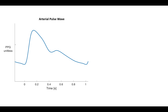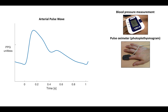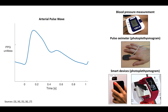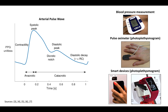The arterial pulse wave is already widely used to identify patients at risk of cardiovascular events. Clinical devices extract blood pressure and heart rate from it, and smart wearables use the photoplethysmogram or PPG pulse wave to monitor heart rate. The pulse wave contains a wealth of additional information on the heart and blood vessels, providing opportunity to measure additional parameters indicative of cardiovascular disease such as arterial stiffness.